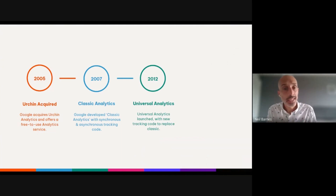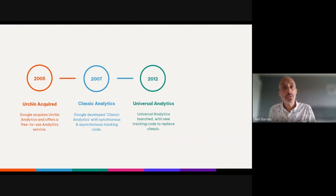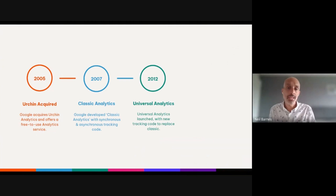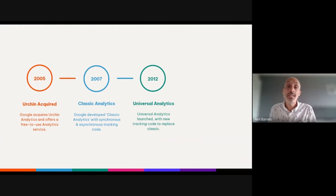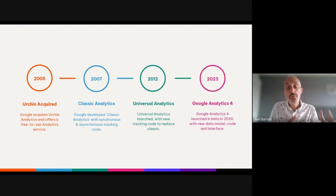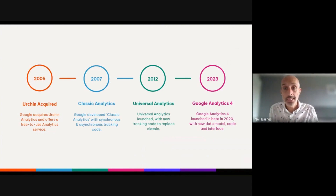Classic Analytics was first launched with synchronous tracking code and then updated to include asynchronous tracking code. It stayed with us for about five years, up to 2012, when Universal Analytics was launched with brand-new tracking code and an improved user interface. Universal Analytics then became a mainstay for the next eight to ten years, with improvements along the way, such as the ability to track user IDs and also track apps. Then in 2020, Google Analytics 4 was soft-launched, and over the last three years we've all been moving over to Google Analytics 4 as our operating standard.